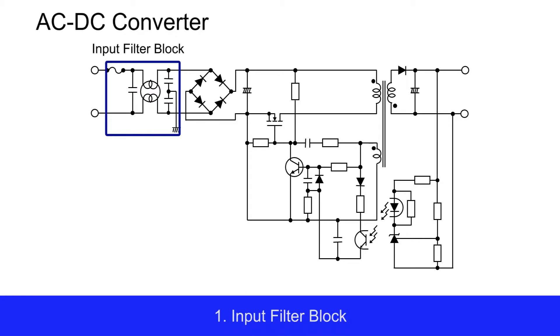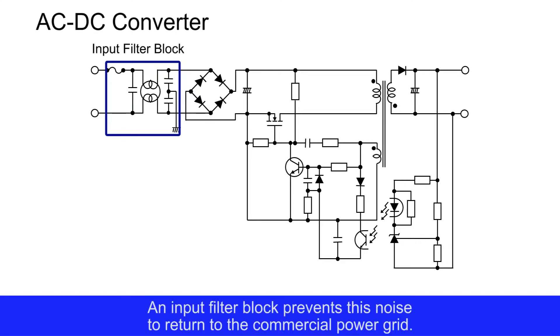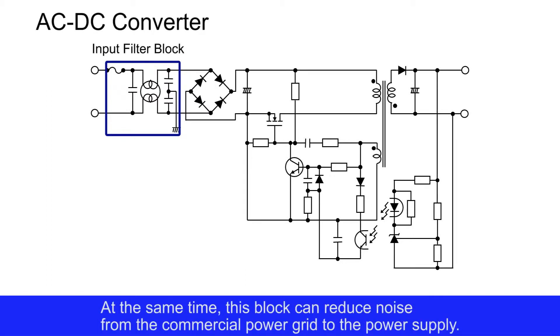First, the input filter block. A switch element of switching power supply generates high frequency noise. An input filter block prevents this noise from returning to the commercial power grid. At the same time, this block can reduce noise from the commercial power grid to the power supply.